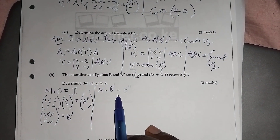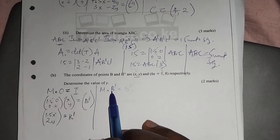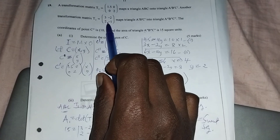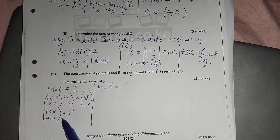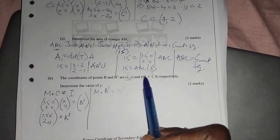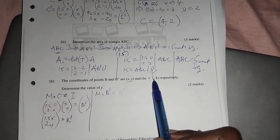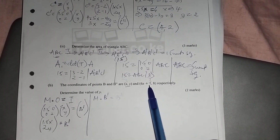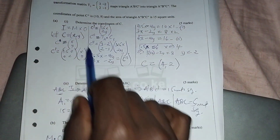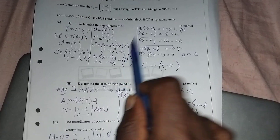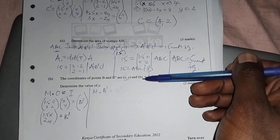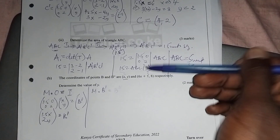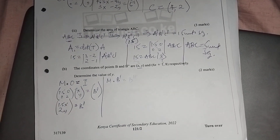Then the second matrix T2 is multiplied by B' to give B''. You are given the coordinates of B'' — for example, terms involving 6X + ... = 8. You form two simultaneous equations, solve the same way as before to get the values of X and Y, then substitute to get the coordinates.